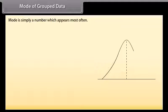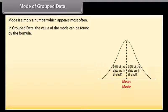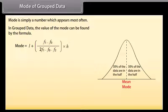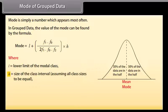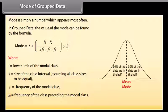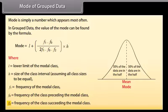Mode of grouped data. Mode is simply the number which appears most often. In grouped data, the value of the mode can be found by the formula: L plus (F1 minus F0) divided by (2F1 minus F0 minus F2), multiplied by H. Where L is the lower limit of the modal class, H is the size of the class interval, F1 is the frequency of the modal class, F0 is the frequency of the class preceding the modal class, and F2 is the frequency of the class succeeding the modal class.